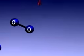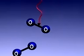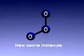Most ozone is found in the upper atmosphere, where it is produced in small amounts when the sun's high energy rays strike ordinary oxygen molecules.